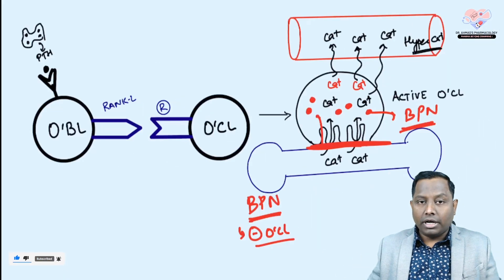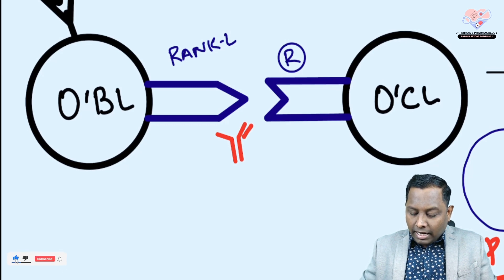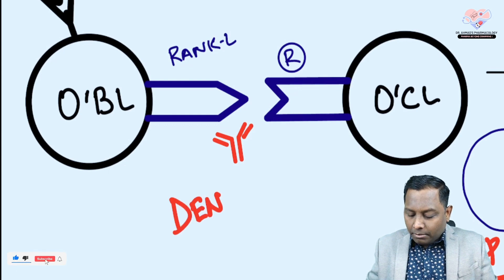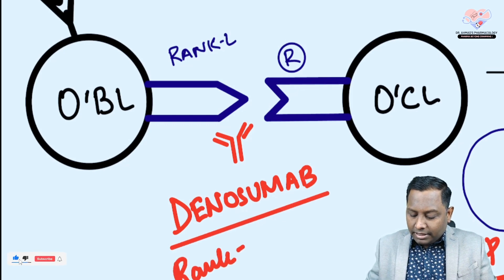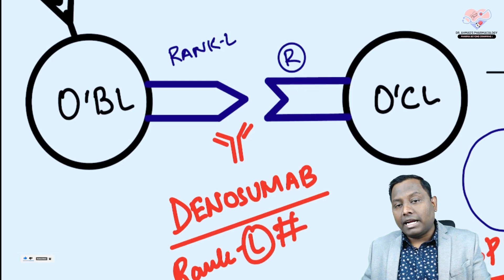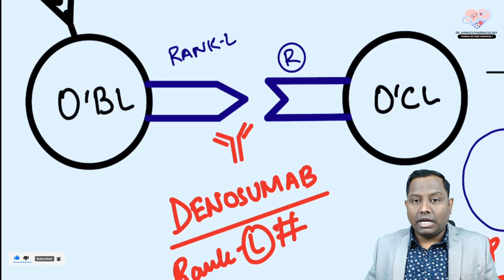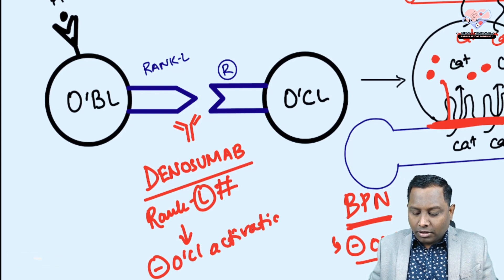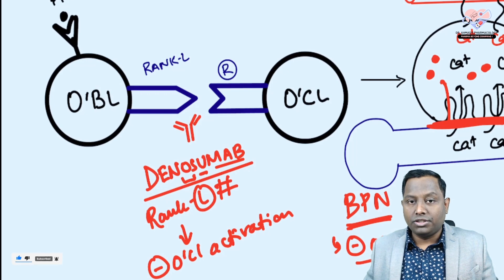Since this is an INICET-pattern MCQ, here's one more important drug: Denosumab. It is a monoclonal antibody that acts at the RANK ligand level. Denosumab binds with RANK ligand and prevents it from interacting with the RANK ligand receptor, so the osteoclast does not get activated. Therefore, Denosumab also inhibits osteoclast activation.